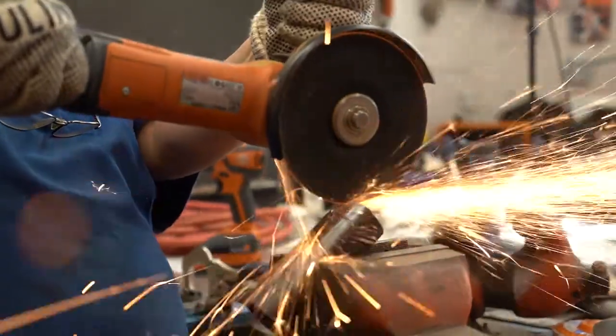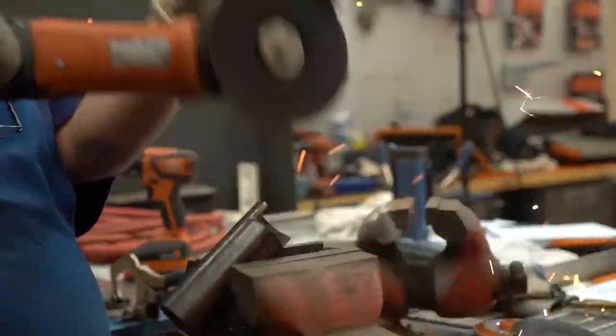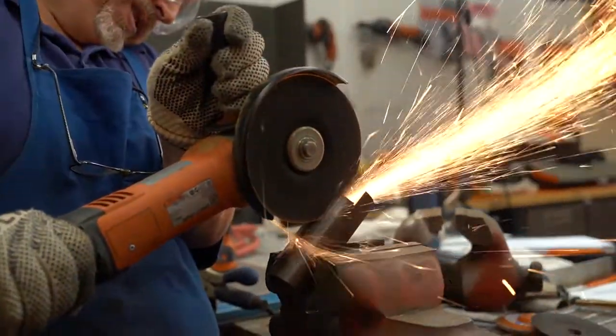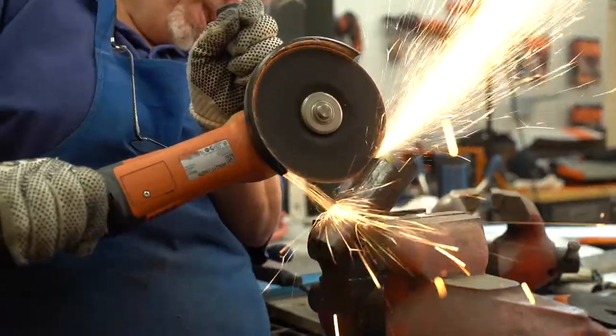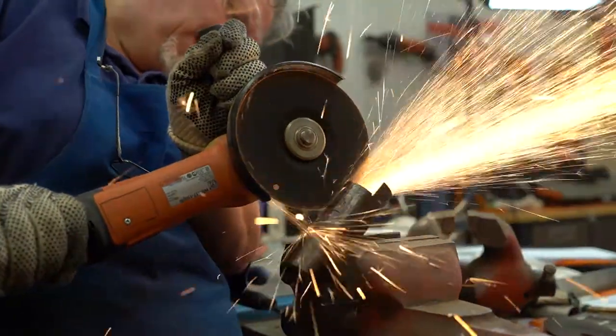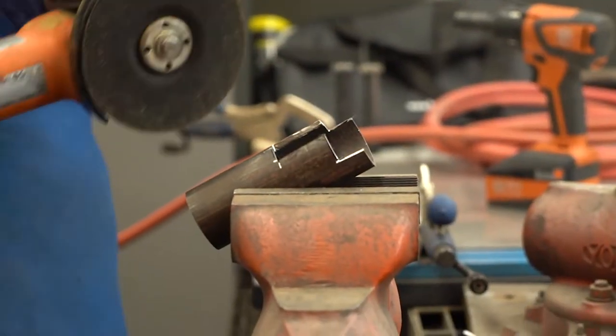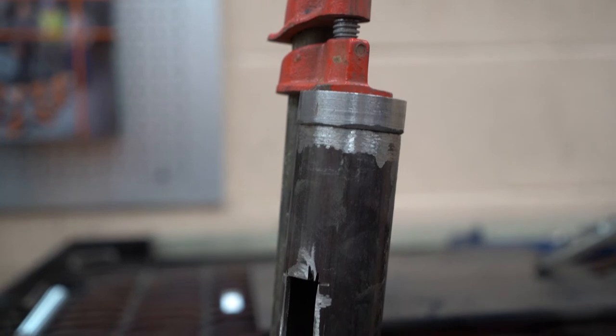Then I took and clamped that in the vise again. Same cut off disc. Looks like that. Then I went to my welder and welded it up.